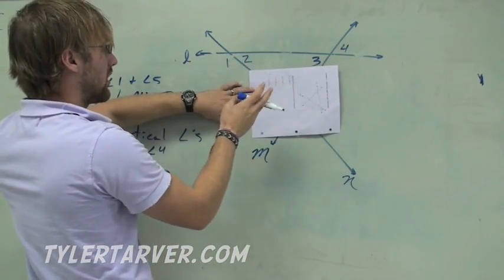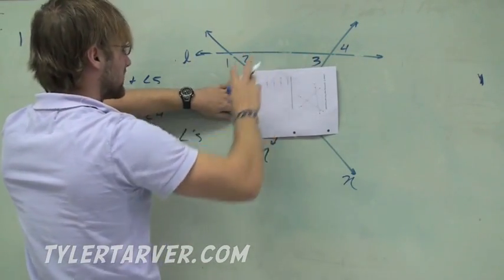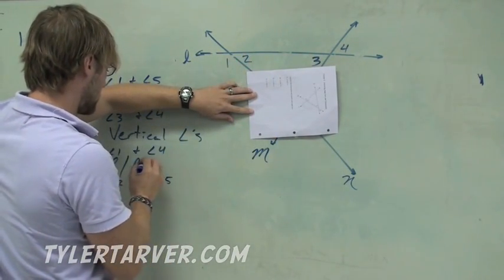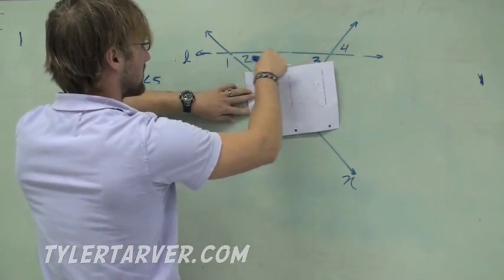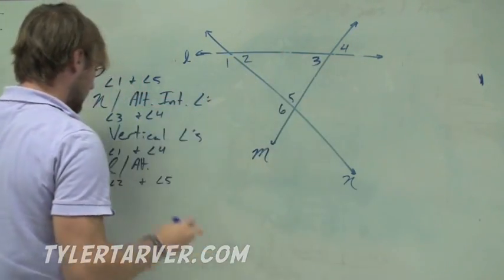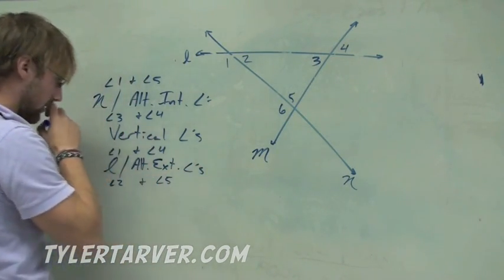I'm talking fast, but guess what? You have a rewind button and you might have a slow-mo. I don't know. One and four, they're on alternate sides, so we know they're alternate. And then, guess what? Those are our two lines. One's on the outside, four's on the outside. They're exterior angles.